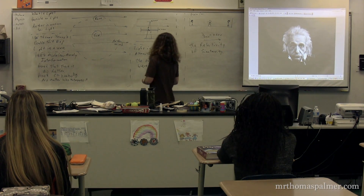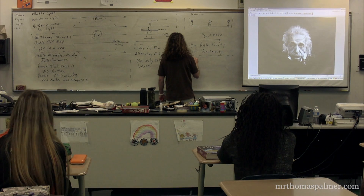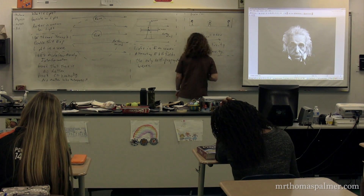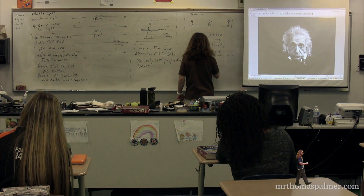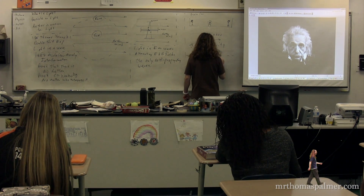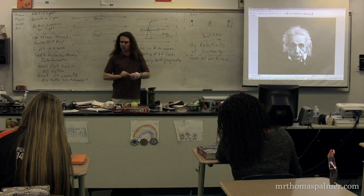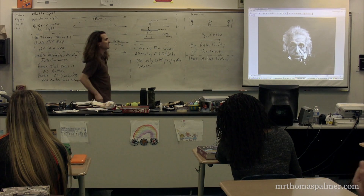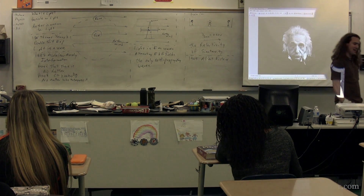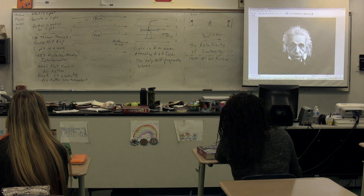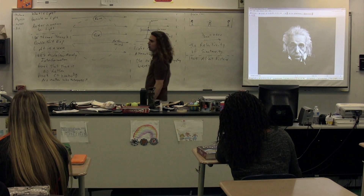Albert Einstein, 1905. Albert Einstein was working as a patent clerk in a Swiss patent office. He was not employed as a physicist anywhere. He was reviewing patent applications for validity, and he published five papers all about physics.